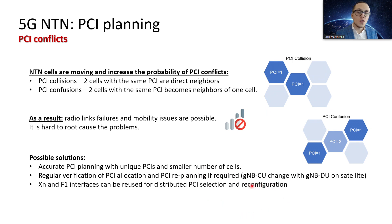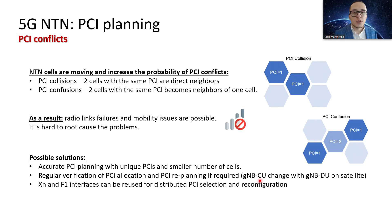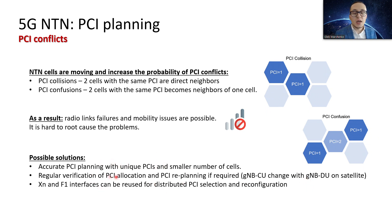This is especially important when using a use case such as a gNodeB with a regenerative payload, where the gNodeB or part of it — for example, the Distributed Unit (DU) — is on the satellite board. In this case, there could be frequent changes between the CU on the ground and the DU on board the satellite, along with changes of PCI and cell identities, which could be a big issue.